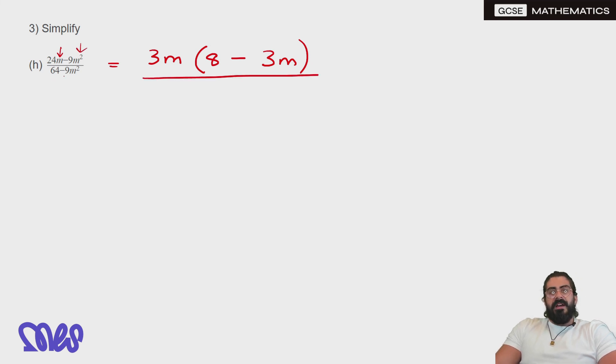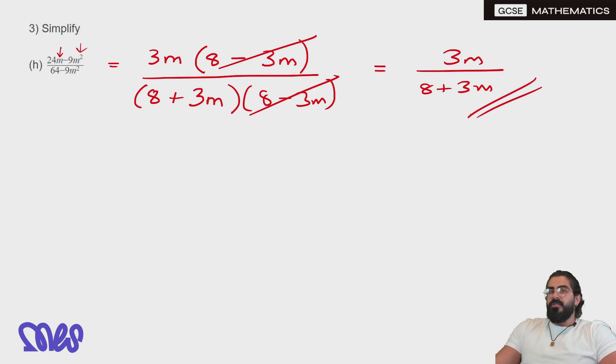Now on the bottom, we have difference of two squares. What multiplies by itself to give 64 is 8. What multiplies by itself to give 9m squared? It'll be 3 times m. Then we'll have 8 minus 3m. Then 8 minus 3m cancels on the top and the bottom, and we're left with 3m over 8 plus 3m is your solution.